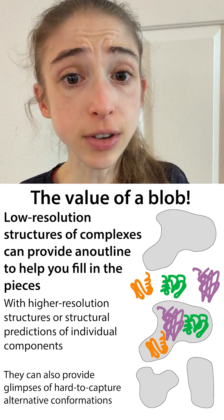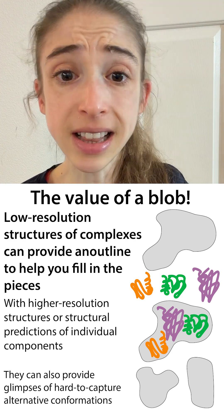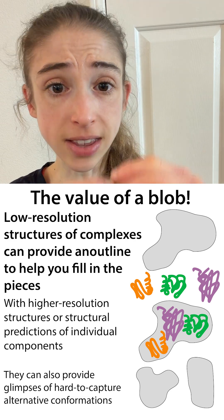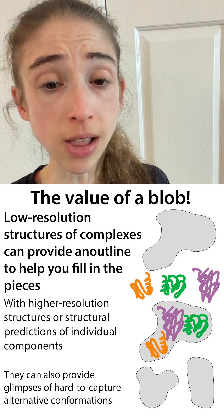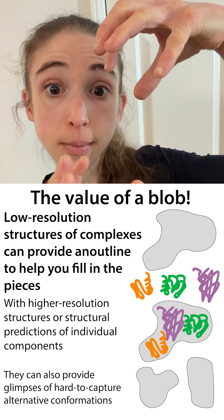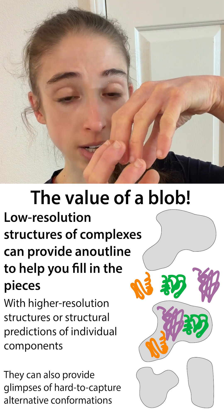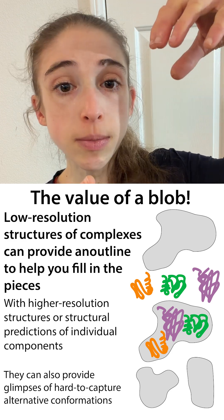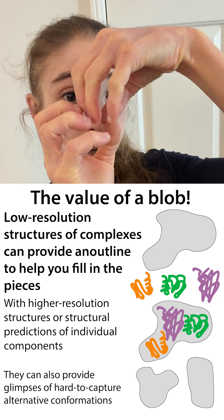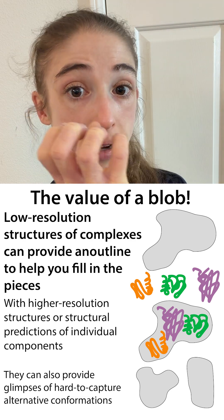Sometimes instead of cryo-EM, you might use a technique like negative staining, where you just get the broader outline, but that's going to show you where things might go in relation to one another. So you can see if this protein is binding to this protein here, or is it binding here, or is it binding somewhere else.